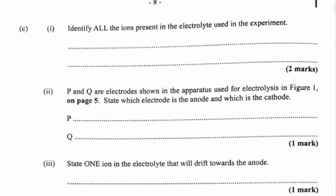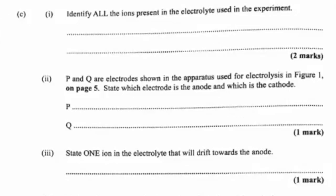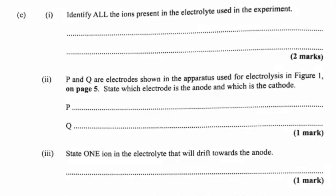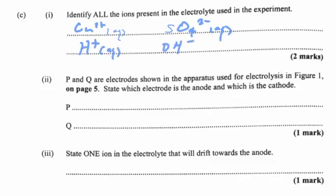In part C, we're asked to identify all the ions present in the electrolyte. We're talking about copper sulfate, so we'll have Cu²⁺ ions and SO₄²⁻ ions. Since it's aqueous copper 2 sulfate, it's in the presence of water, so we would also have H⁺ ions and OH⁻ ions.